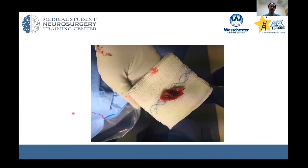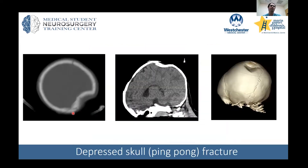He was taken to surgery due to this fracture being open and depressed. There was an impacted piece of bone that we removed, and we simply placed a mesh over the defect. The fracture here is a little more pronounced — we call this a ping-pong fracture, as if you took a ping-pong ball and crushed part of it.